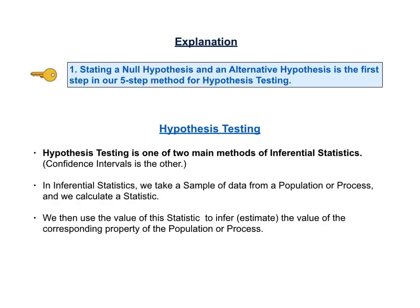Let's begin our detailed explanation of each key to understanding. Our first key to understanding, KTU number one, says stating a null hypothesis and an alternative hypothesis is the first step in our five-step method for hypothesis testing. But what is hypothesis testing? Hypothesis testing and confidence intervals are the two main methods used in inferential statistics. In inferential statistics, we take a sample of data from a population or process, and we calculate a numerical property, for example, the mean, from the sample. We then use this value of the sample property to infer, or estimate, the value of the corresponding property of the population or process, the population or process mean, in our example.